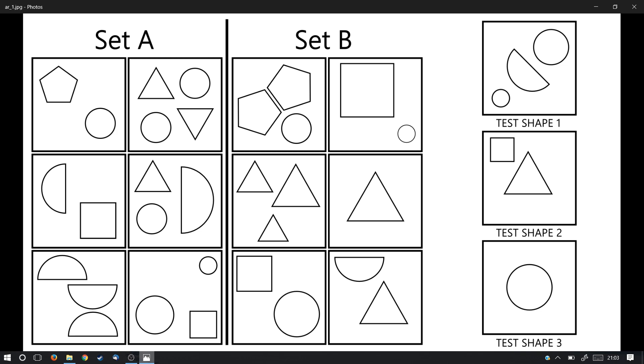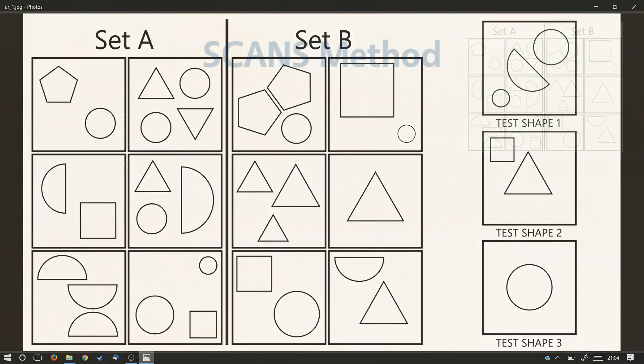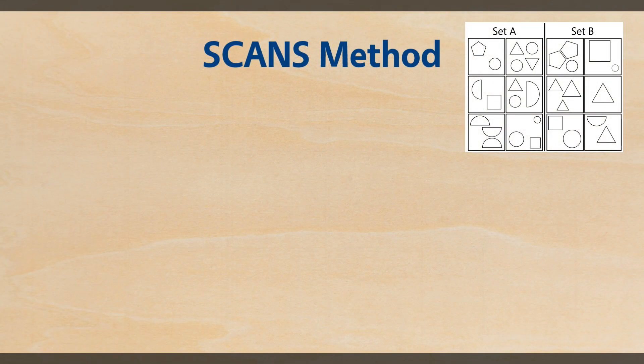The way these questions work is that there is a series of rules that govern how the shapes are arranged in set A and set B. And these rules are consistent for all six boxes belonging to each set. There is a pattern or multiple patterns that hold true for every single box in each set. And it's our job to work out what those rules are, so that we can then assign our test shapes to them. But how might we do that, because surely there's almost an infinite number of rules that could apply to either of them. And that's true, of course, but these questions are designed by humans for other humans to solve. So the best way to start would be trying to identify some of those common factors. Which is the perfect time to introduce our first element of the day, the SCANS method.